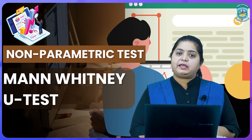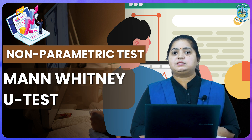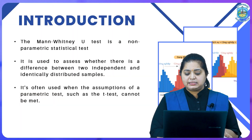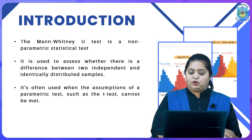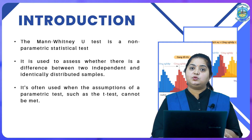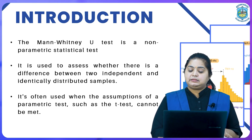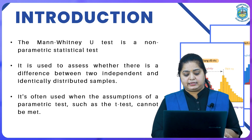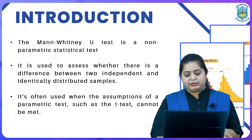It is also a non-parametric test. In our previous videos, we covered many non-parametric tests, and this is one of them. The Mann-Whitney U-test, also known as the Wilcoxon rank sum test, is a non-parametric statistical method used to assess whether there is a significant difference between two independent samples. It was developed by Frank Wilcoxon and is particularly valuable when the assumptions of a parametric test like the T-test cannot be met. It is widely applied in various fields including medicine, social sciences, and environmental sciences.